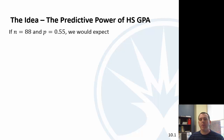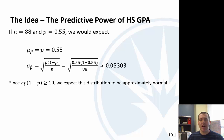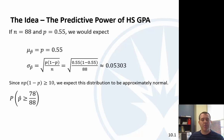If the proportion really is 55%, we can look at the distribution of the sample proportion. We'd expect the mean of the sample proportions to equal the population proportion, and using the standard deviation formula from Chapter 8 and Chapter 9, we'd expect the standard deviation of the sample proportions to be about 0.05. We'd expect this distribution to be approximately normal, so we can use the normal distribution to find the probability of getting a sample proportion of at least 78 over 88.